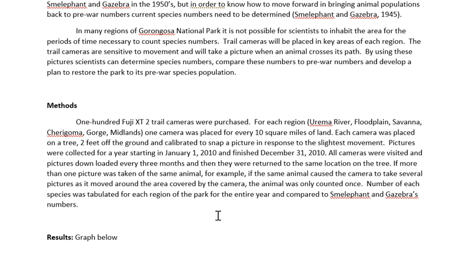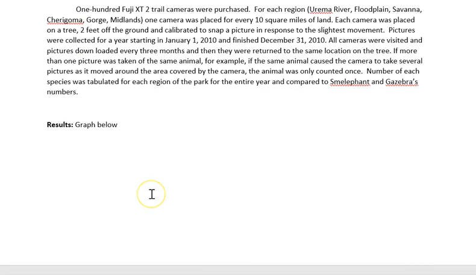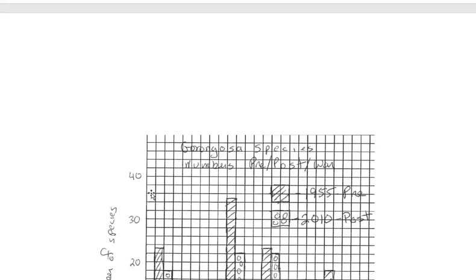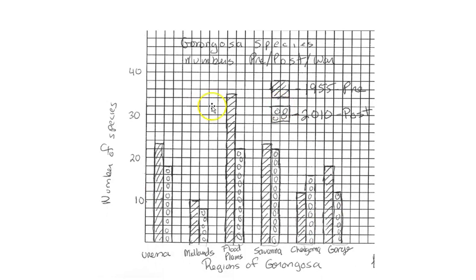Note the level of detail in the methods. The results are presented as a graph — in this case on graph paper, which we supply. You can download it, then scan or photograph it and insert it into your lab write-up. It's a bar graph, and it makes the results very easy to read — showing the comparison of the number of species in each area of Gorongosa before and after the war.